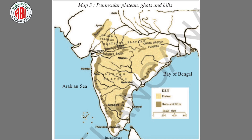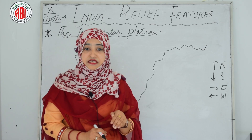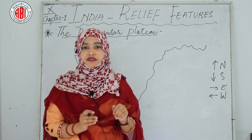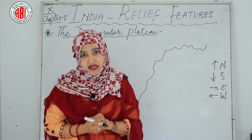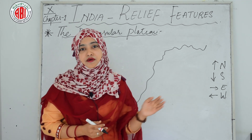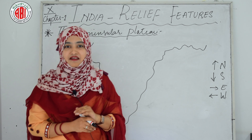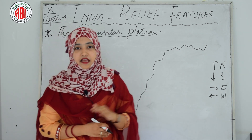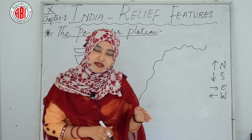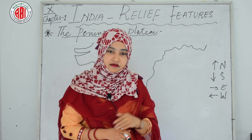In comparison to the Gangetic Plains, the plateau region is dry. The Gangetic Plains are formed by rivers and alluvial deposits, while the plateaus are very dry land when compared to the Gangetic Plains.